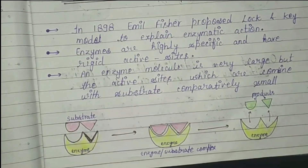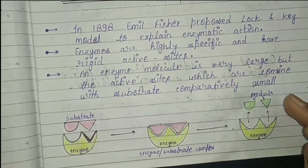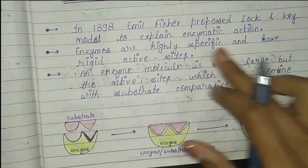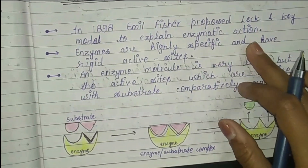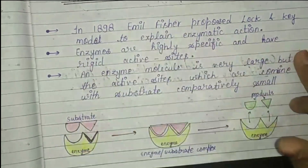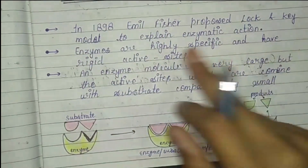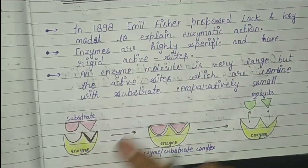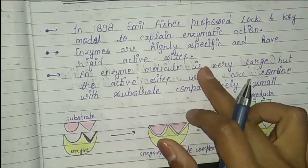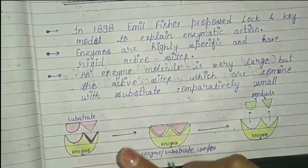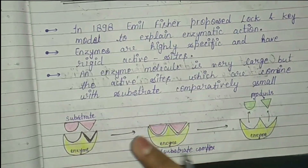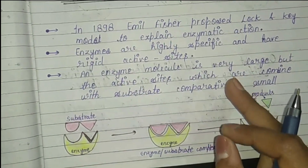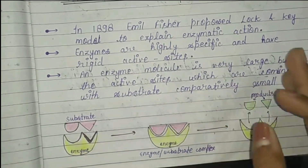Now comparing Fisher and Koshland: what is the main point? In Fisher's model the active site is rigid, but what does Koshland say? We will see.